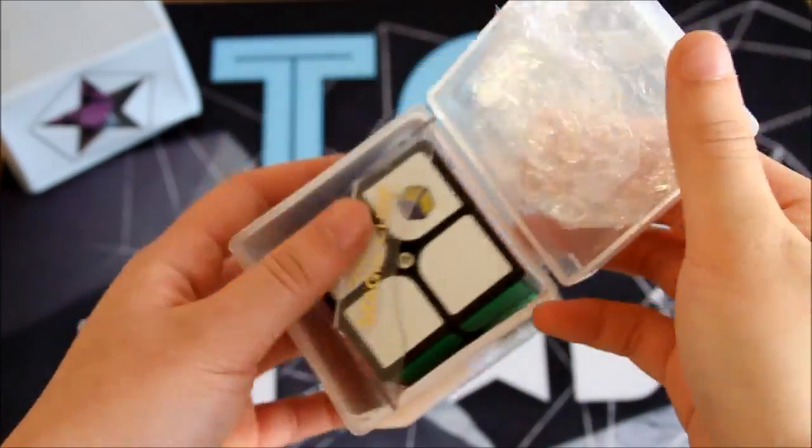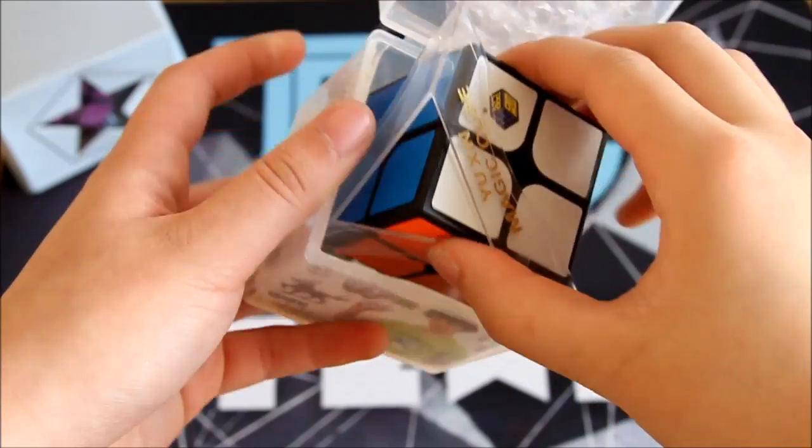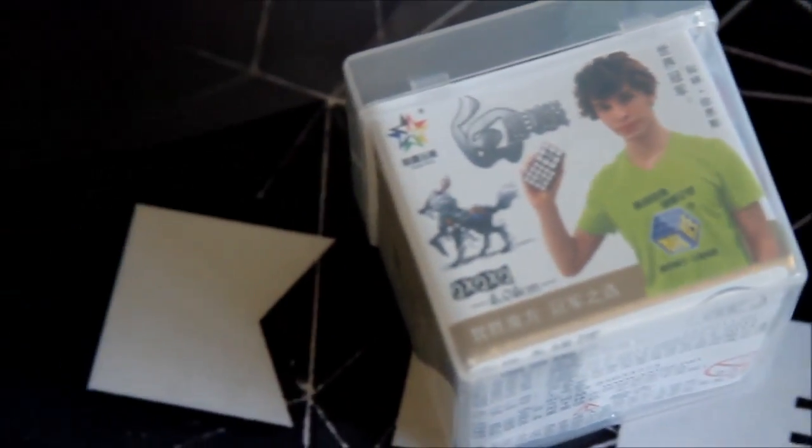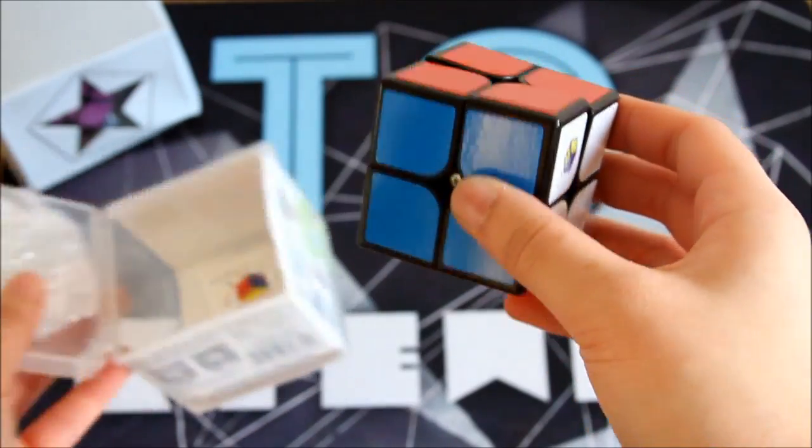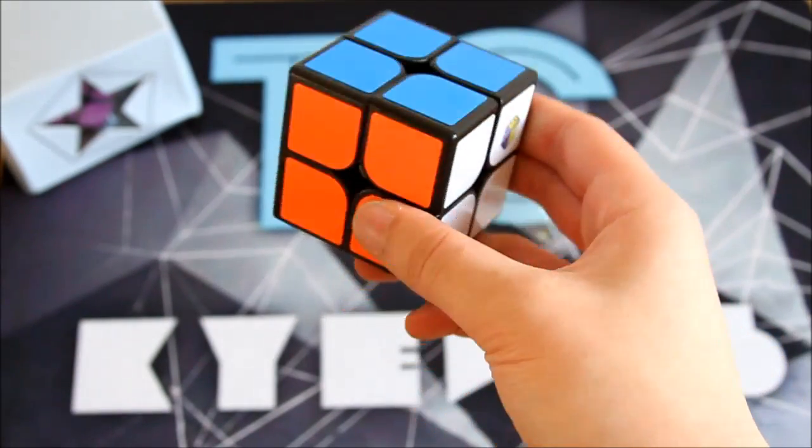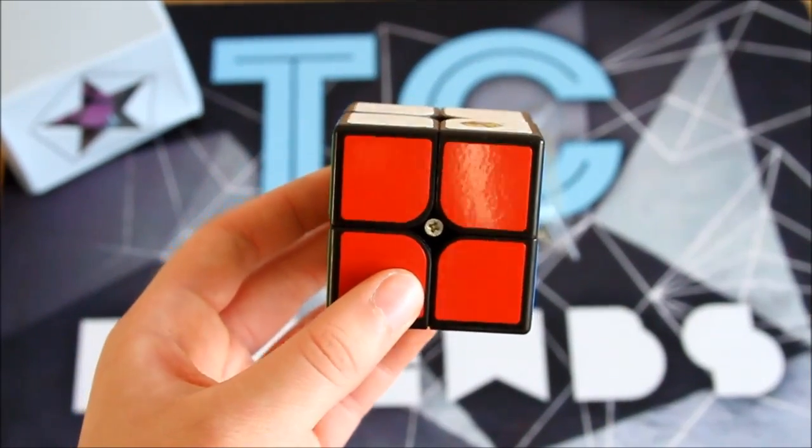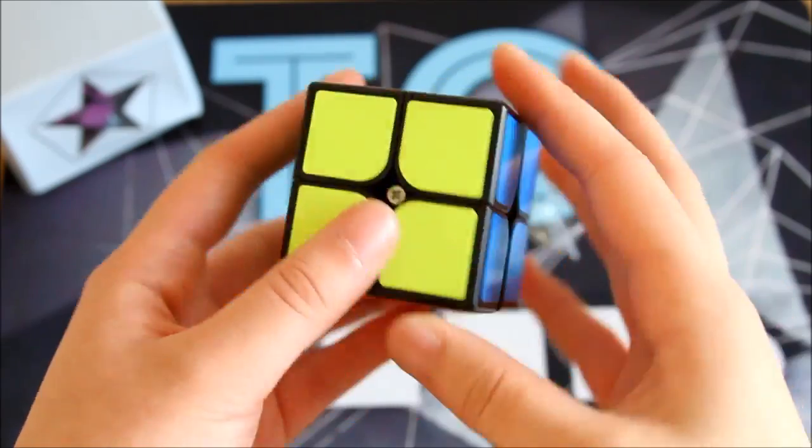Next up, let's check out this Yuxin White 2x2. It comes in this really cool case and has a stand along with it. Here is the cube. I've actually heard some really good things about this cube as well. I heard it's the nearest thing we have to an old plastic Dayan 2x2.